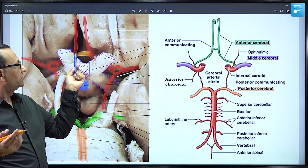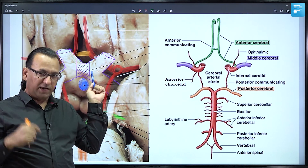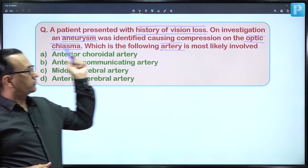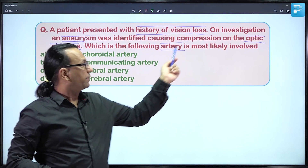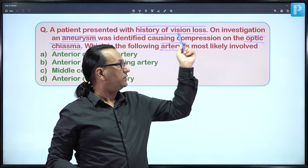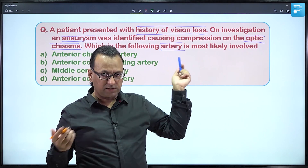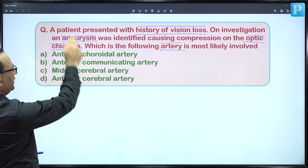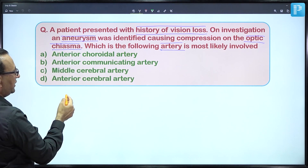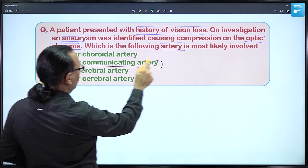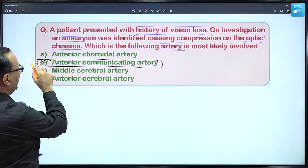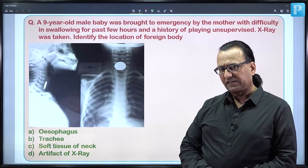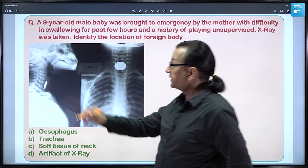The problem in this case was the anterior communicating artery — its aneurysm compressed the optic chiasma leading to bitemporal hemianopia. Choice B — anterior communicating artery — should be our answer.